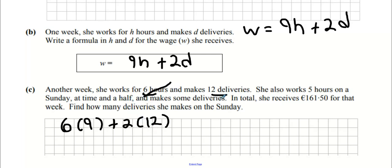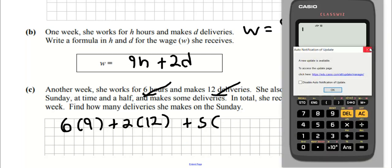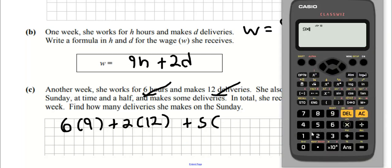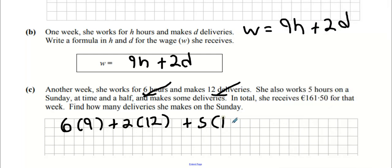She works 5 hours on Sunday. What's her rate for Sunday? What does time and a half mean? 9 euro multiplied by 1.5, so we're going to go 5 times 13.50 here. And then she makes 2 euro multiplied by D, which represents her Sunday deliveries. And that will all equal 161 euro and 50 cents.